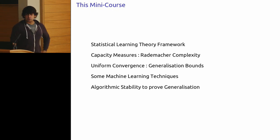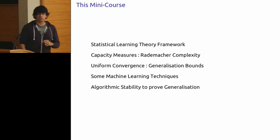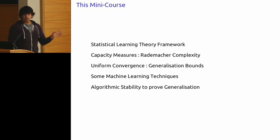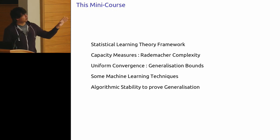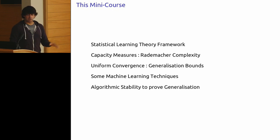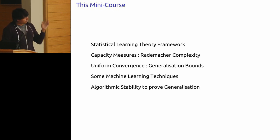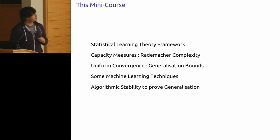I'll also talk about capacity measures of classes of functions. VC dimension is one of them. I'll focus mainly on Rademacher complexity, which gives a different way of bounding the actual error your classifier achieves — not on the training sample you actually observe, but on data you haven't seen before. This is through uniform convergence results if you can bound the Rademacher complexity of certain classes of functions.